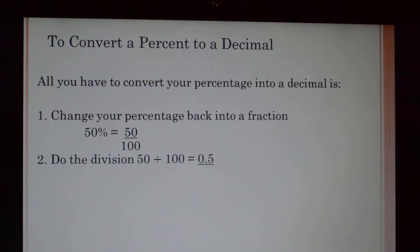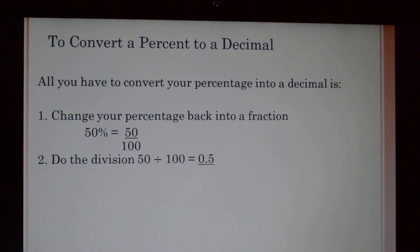Now let's move on to converting a percent to a decimal. All you have to do to convert your percentage into a decimal is: number one, change your percentage back into a fraction. So fifty percent is equal to 50 over 100. That's actually a division problem. So let's do the division. Fifty divided by one hundred is equal to 0.5, or five tenths of a hundred.